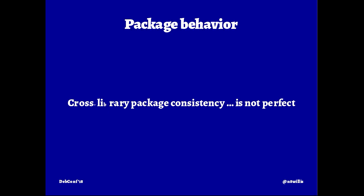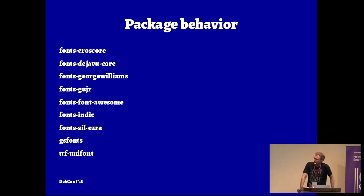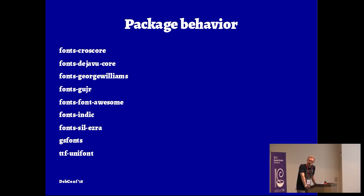There are a few other things on the package behavior front where I think we could improve. Consistency is not perfect when you look at your font library as a whole. Here's a random selection of font package names. CrossCore is a set of unrelated-style fonts from the same development project. DejaVu-core is one font. George Williams is a designer's name. Gucher is a language. Fonts-Awesome is a web resource that's not a font at all. Gucher and Indic are both meta packages. SIL-Ezra — SIL is a font foundry, Ezra is the name of the typeface. GS Fonts is totally different. Unifont doesn't even have the same prefix as everything else.